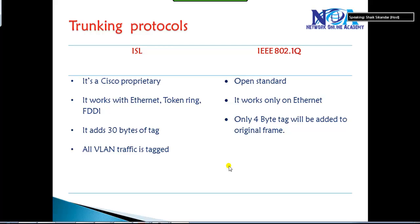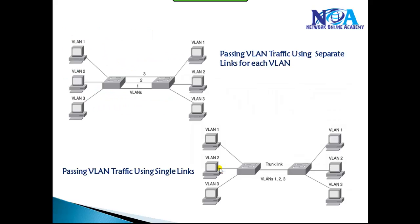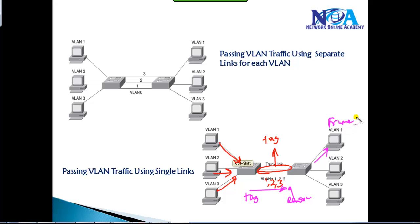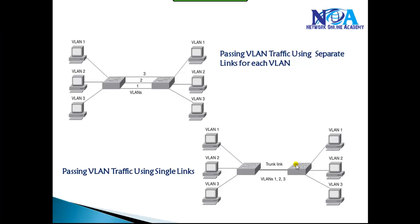In this section we'll be continuing with trunking protocols and trunking concepts. Trunking is a method of allowing multiple VLAN traffic to go on the same link. Even though traffic is coming from different VLANs, the trunk link ensures it differentiates each VLAN by adding a separate tag. When sending, it adds the tag, and when received on the other side it removes the tag and sends to end devices as a normal frame. This frame tagging differentiates each and every VLAN traffic on the same link.